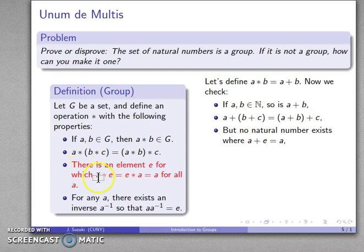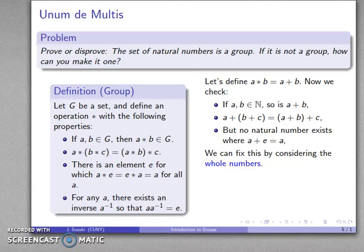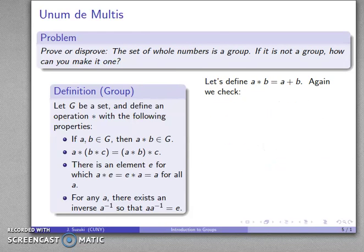We need an identity element: A plus E has to give us what we started with. Because we're dealing with the natural numbers, this is not going to be true — the identity does not exist. We can fix this by changing our set from the natural numbers to the whole numbers. So let's make that swap and continue to define A star B as A plus B.